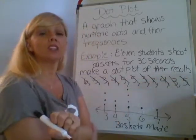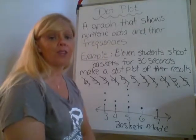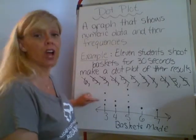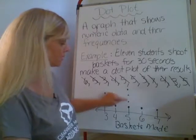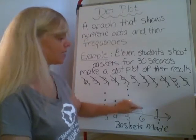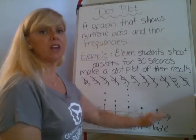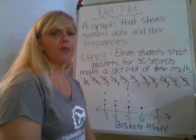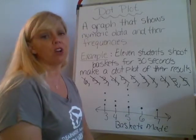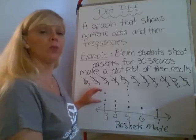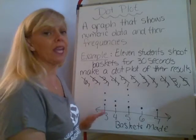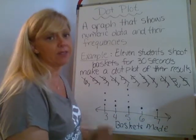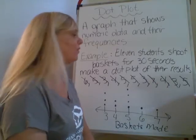Here is our dot plot of the 11 students that scored baskets. We have 11 dots: 1, 2, 3, 4, 5, 6, 7, 8, 9, 10, 11. Each dot represents a person, and a lot of people get confused between the number and the frequency — the number the data represents. So let's ask a few questions about this.